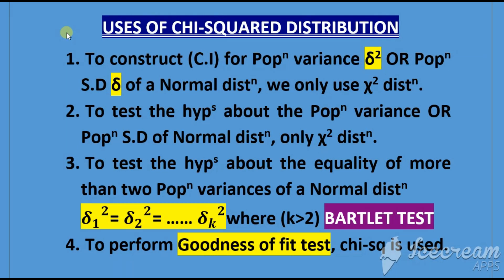First of all, chi-square distribution is used to construct a confidence interval for the population variance sigma-squared or population standard deviation sigma of a normal distribution. If you want to construct a confidence interval for the population variance or population standard deviation, you use chi-square distribution.